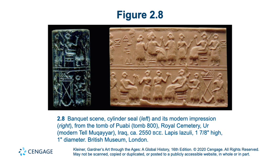These seals give historians priceless information about their religion, society, including how they dressed, how they dined, what shrines looked like, how they depicted gods, rulers, and other mythological figures — because all this could be depicted in the seal. What we're seeing here is the cylinder seal of Puabi, who was a wealthy woman from Ur — sometimes called a queen, though they don't actually have information confirming she was. On the left is the seal, and on the right is the relief made from rolling the seal over clay. This would literally have been her mark.